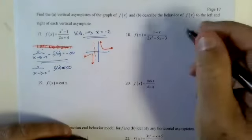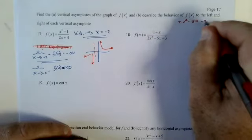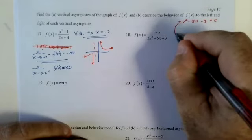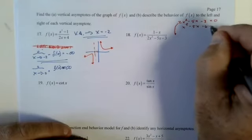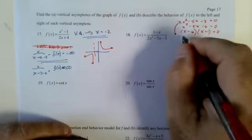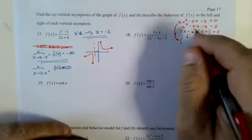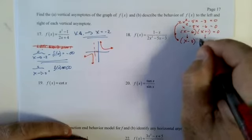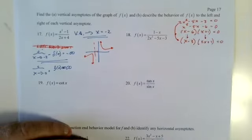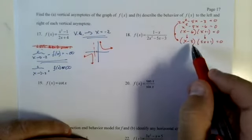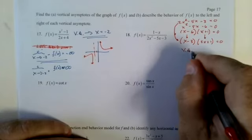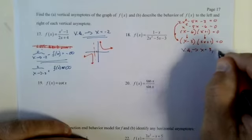Vertical asymptote — let's do a little math. 2x² − 5x − 3 = 0. Trick: 2 times negative 3 is negative 6, find factors of negative 6 that add to negative 5: that's negative 6 and positive 1. Factor to get (x − 3)(2x + 1) = 0. So we have vertical asymptotes at x equals 3 and x equals negative one-half.